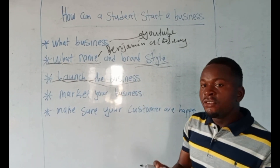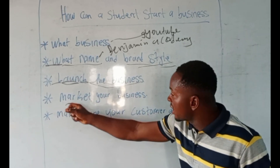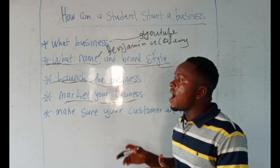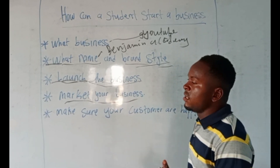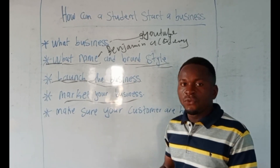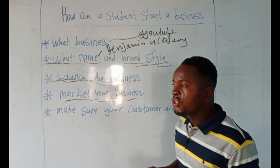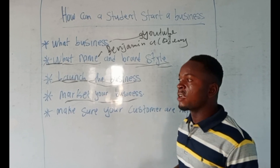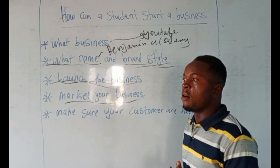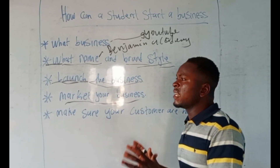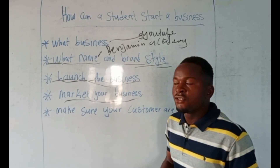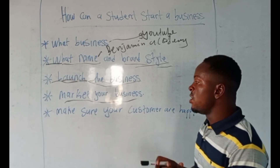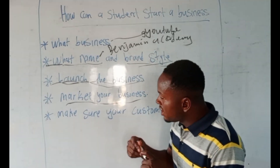The next step is to market your business. Marketing your business is telling people what you do — for instance, I create videos on chemistry, biology, literature, and economics. You send the link to people, you tell friends, you go for adverts. That is marketing your business, and that's what you need to do.